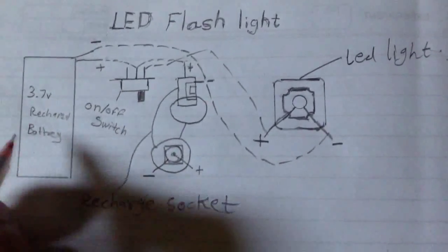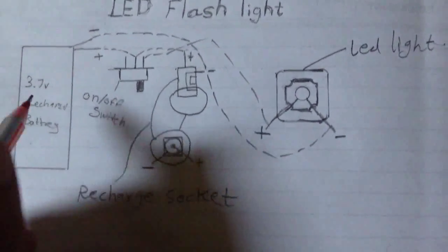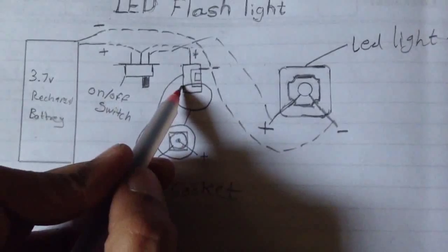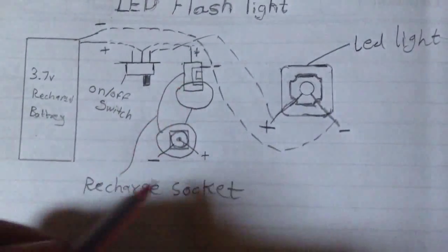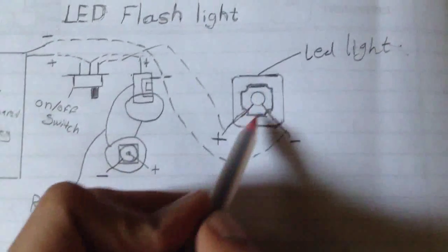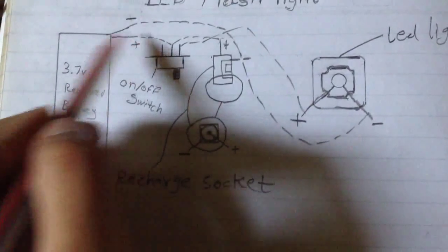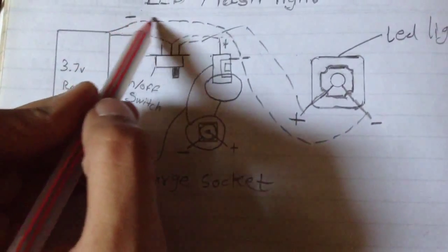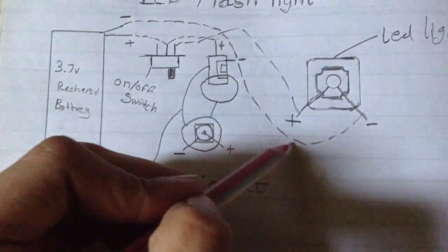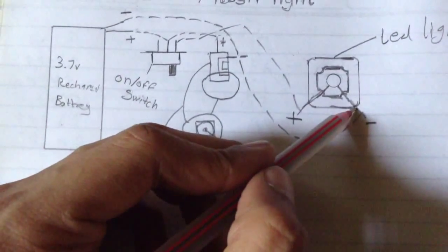First, you need a 3.7 volt rechargeable battery, a plus-minus switch on-off button, a recharge pin component, and an LED flashlight. Let's get started. The plus connects like this, and the minus directly connects to the LED light minus.